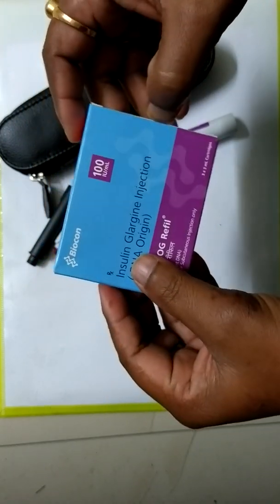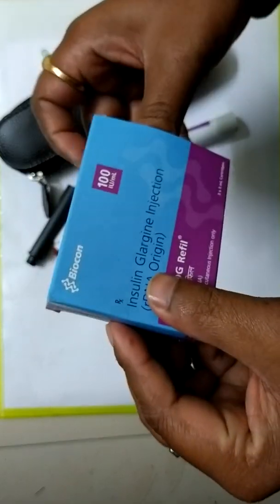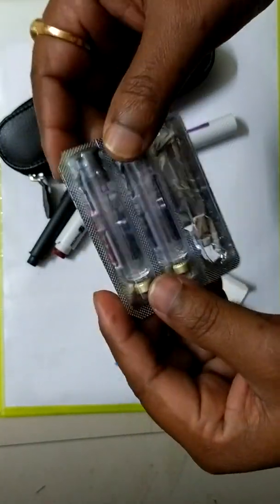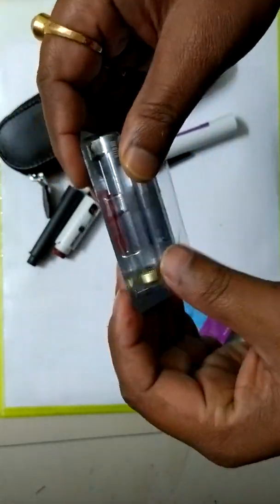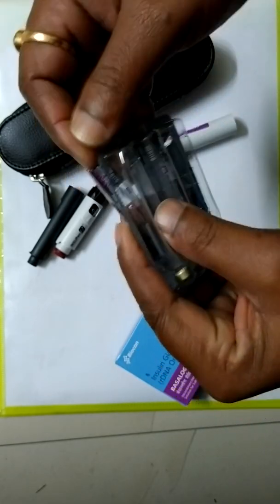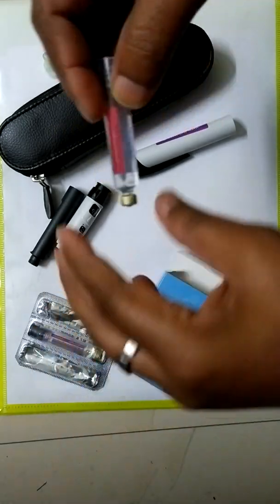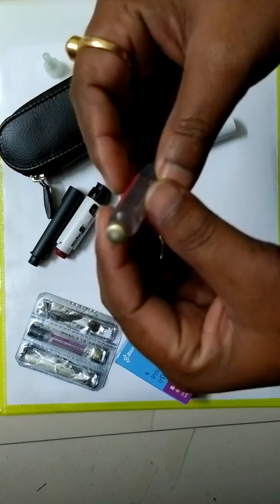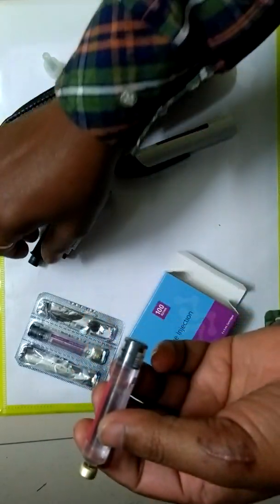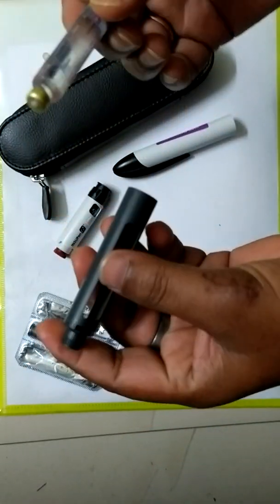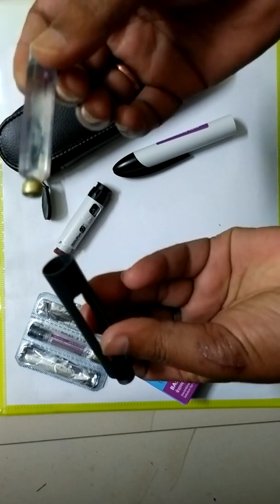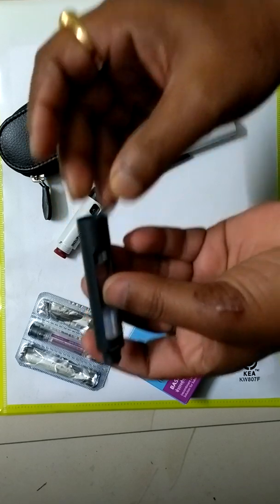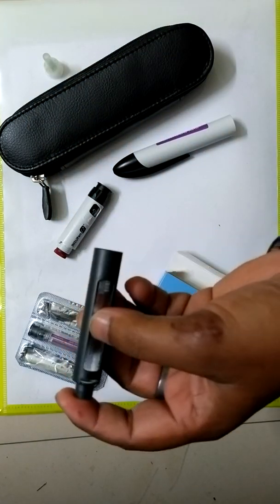Now we are going to fill the pen with a new cartridge. These are the cartridges. This is the plunger stopper of the cartridge and this is metal head. Metal head should be in this side. I am inserting the metal head in the cartridge chamber.